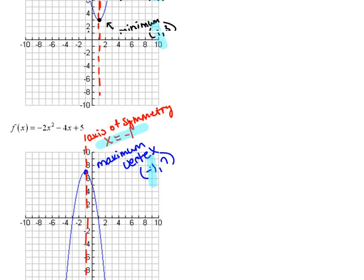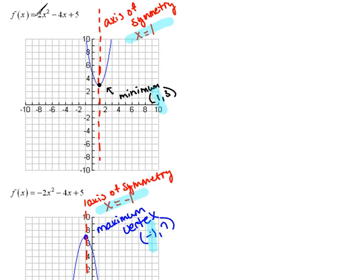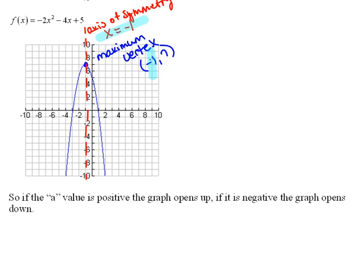Now, if we understand that a positive means that it opens up and a negative means that it opens down, we should be able to look at equations and tell which way they open just by their equation. If the a value is positive, the graph opens up. If the a value is negative, the graph opens down.